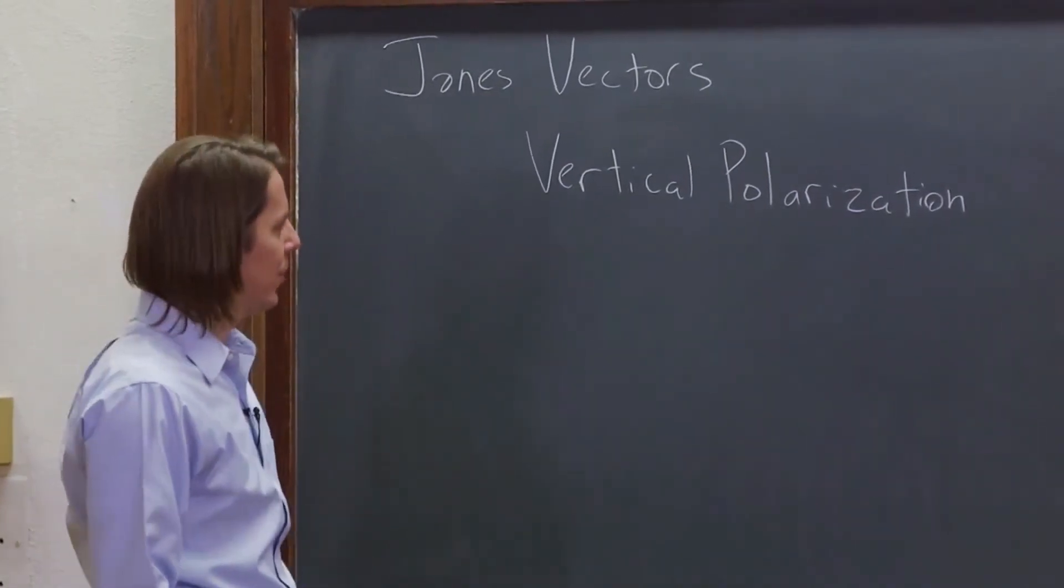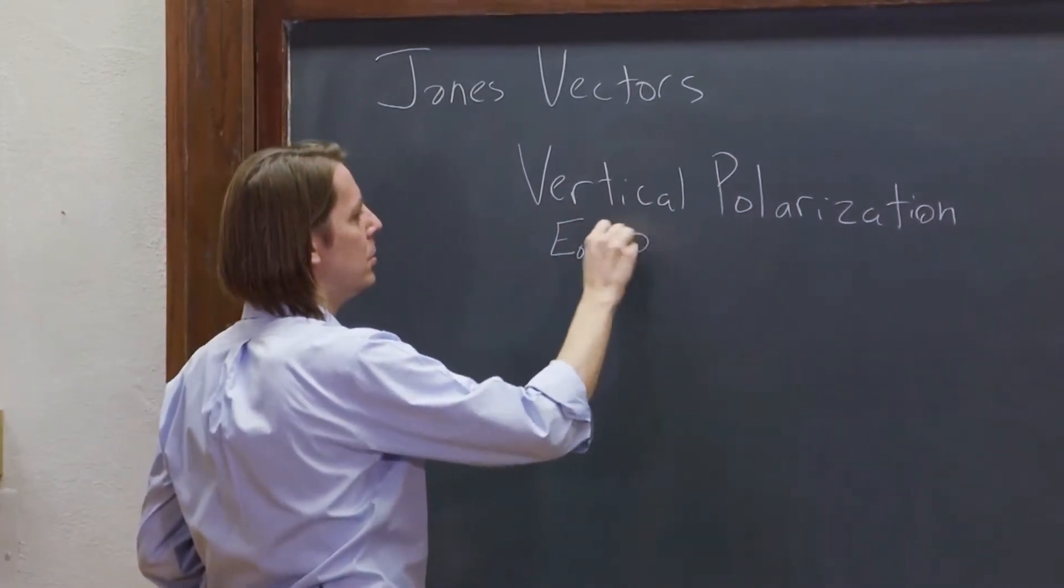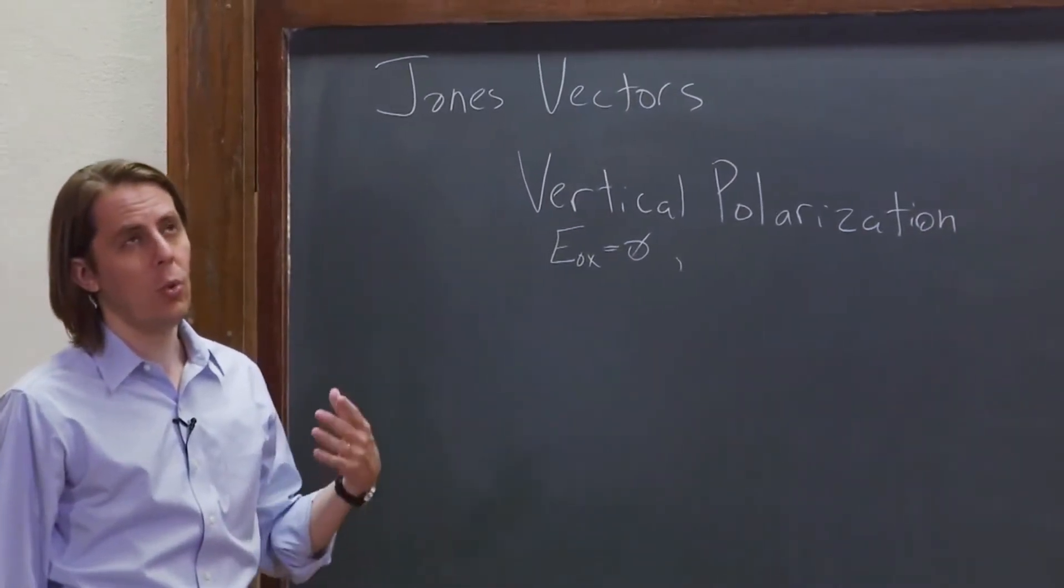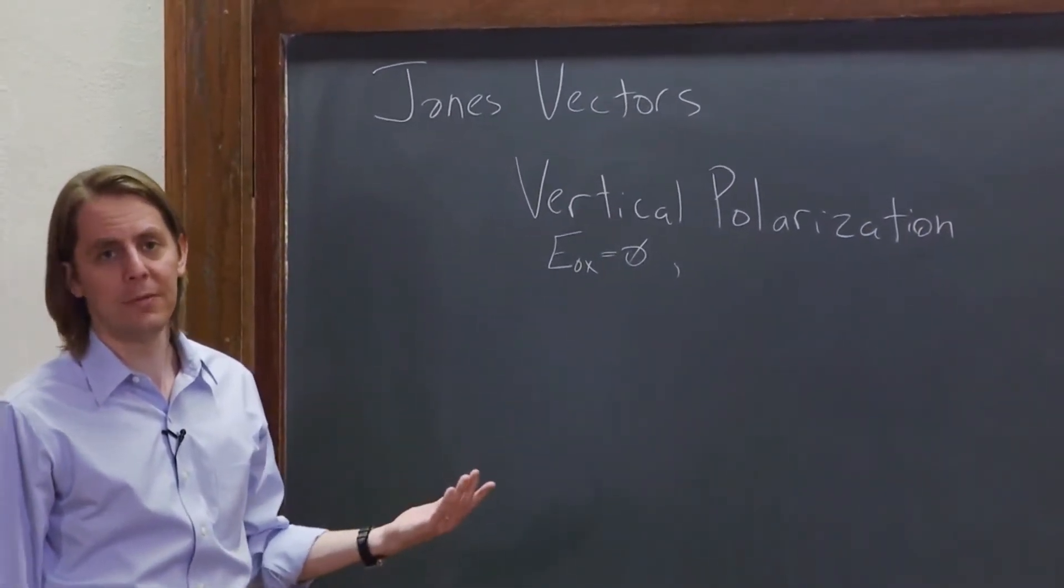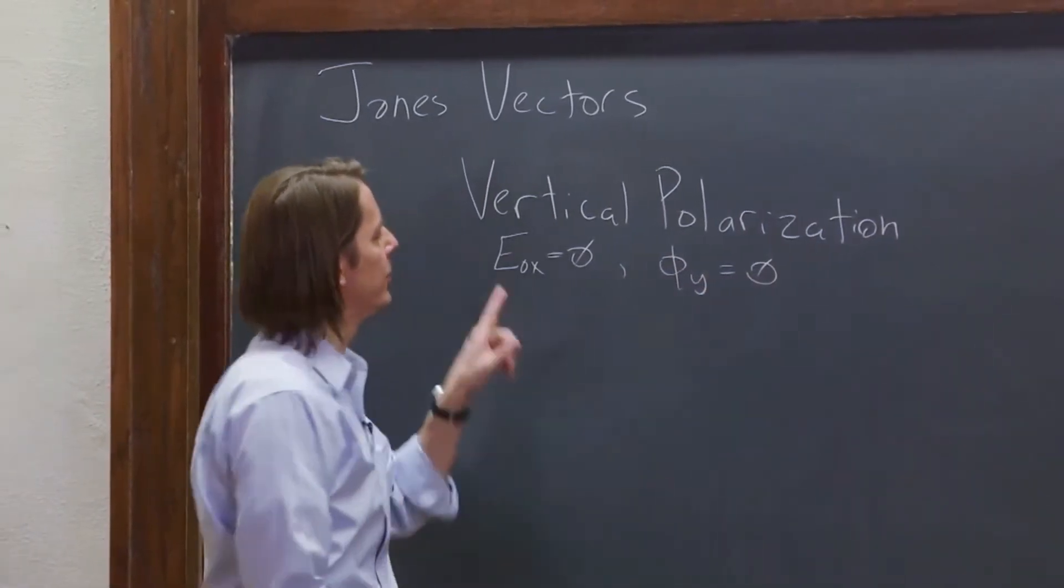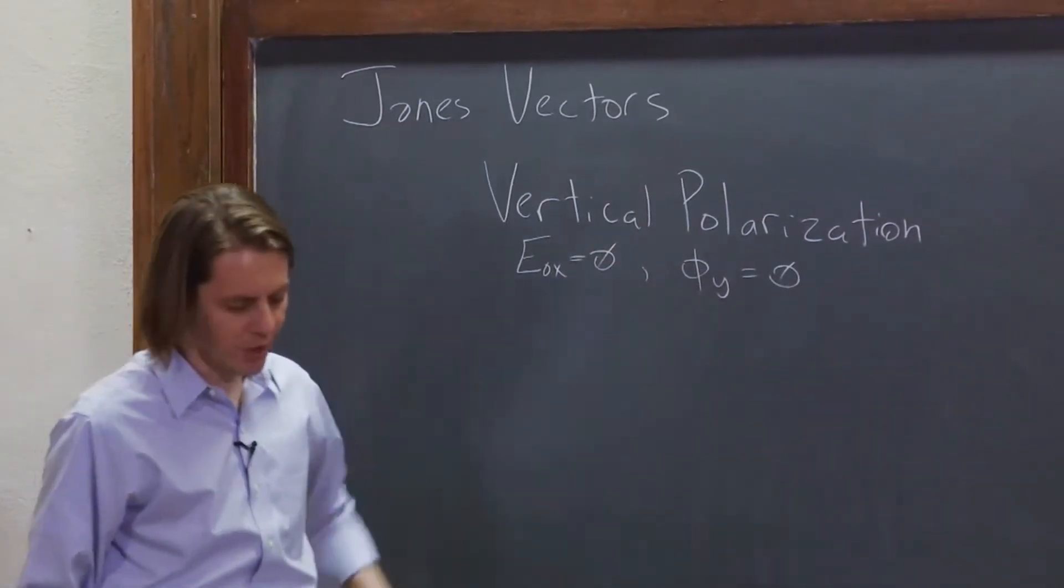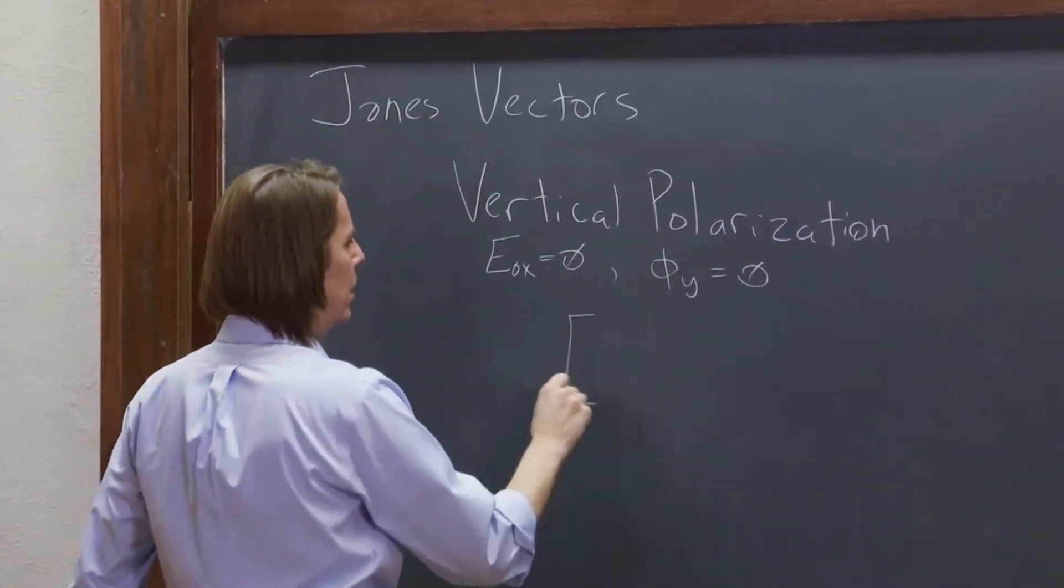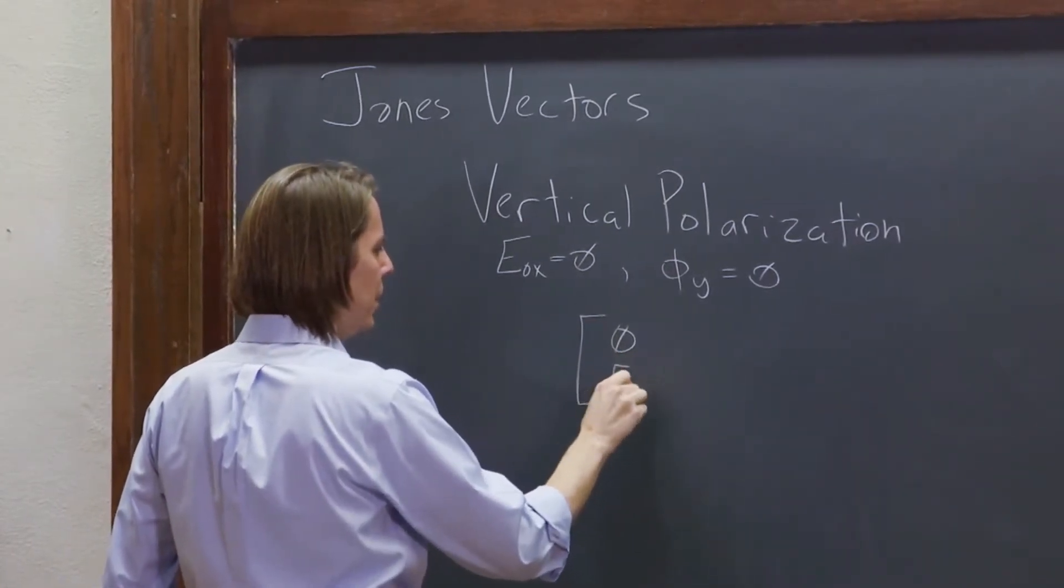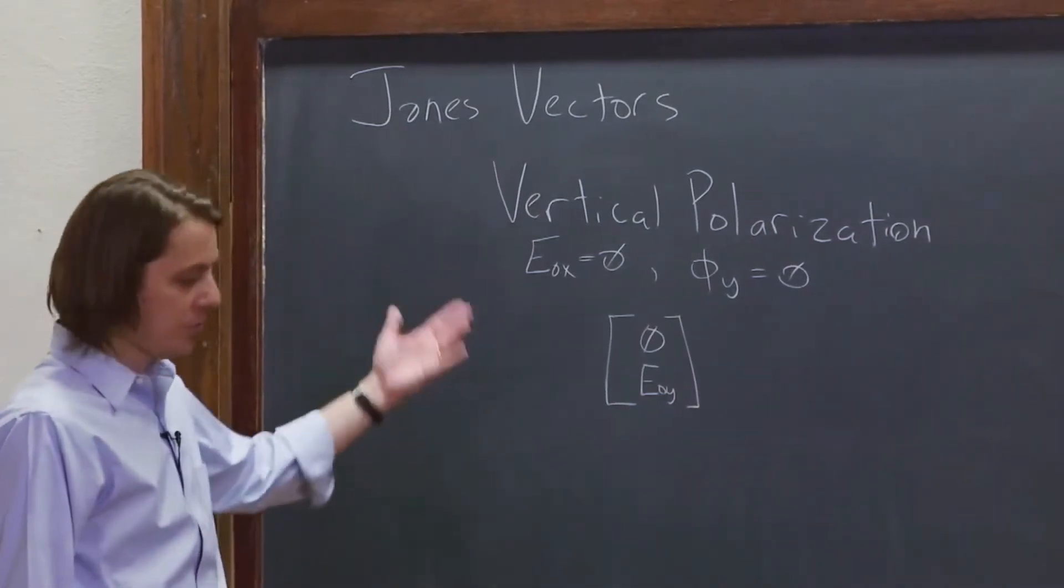If we're going to describe vertical polarization, that means the horizontal amplitude must be zero. And as long as we're just dealing with one sinusoid, we might as well let the phase be zero. This gets rid of the horizontal component. We just have one, why keep up with phase? Then we can get it down to this simple horizontal component zero, y vertical component E not y. So that is vertical polarization.